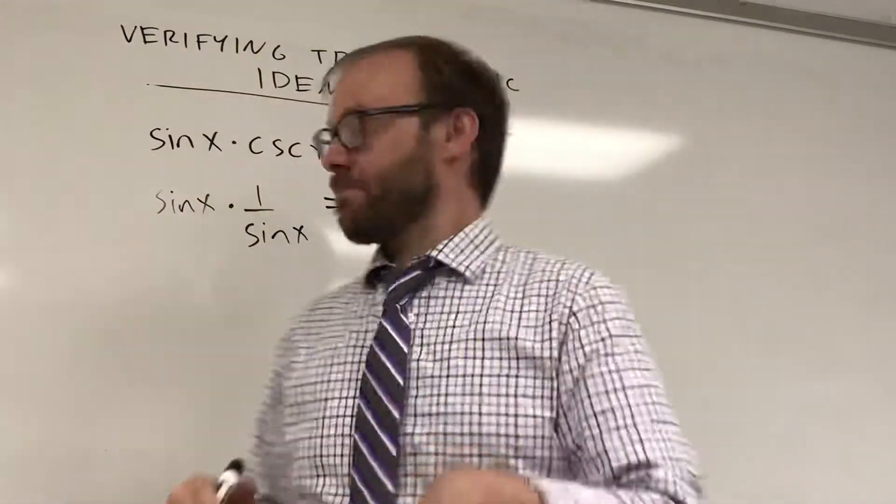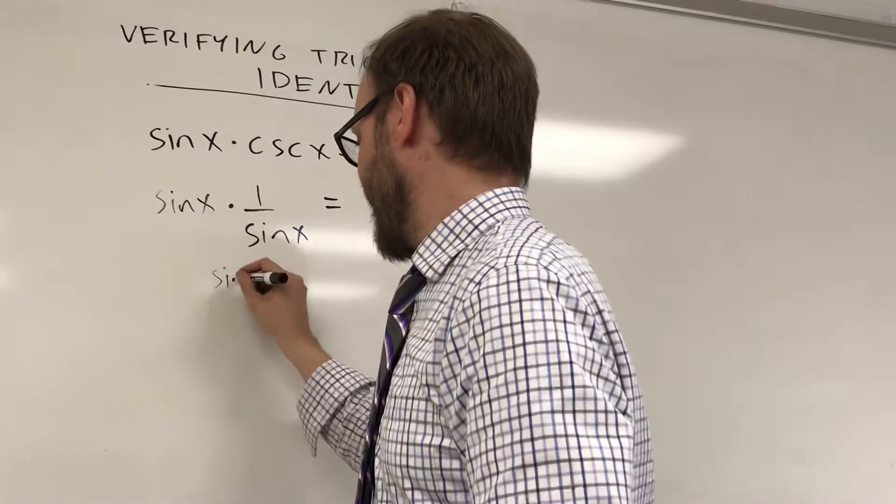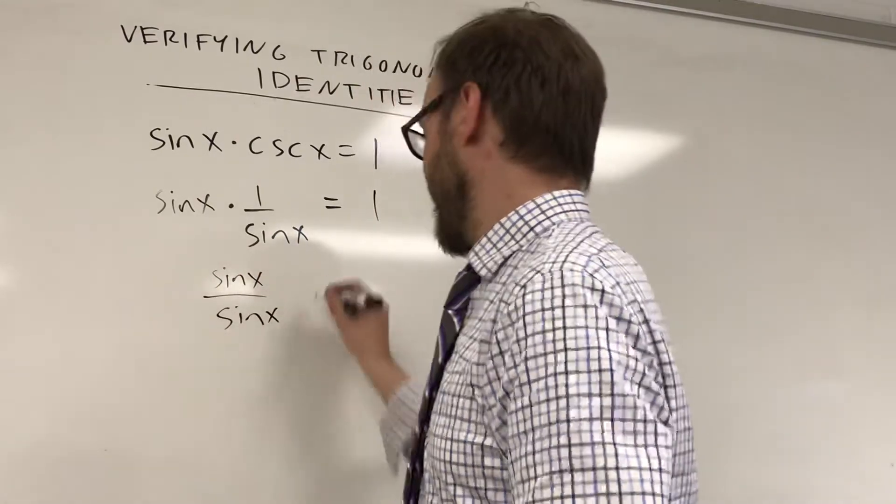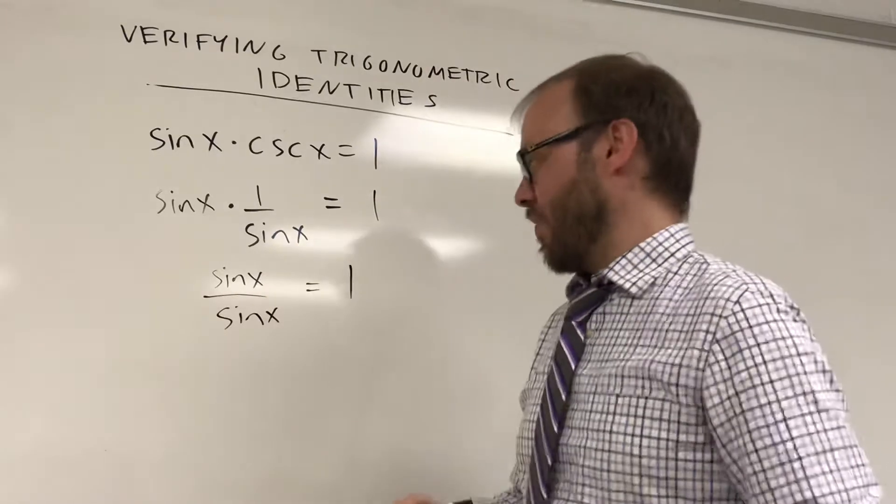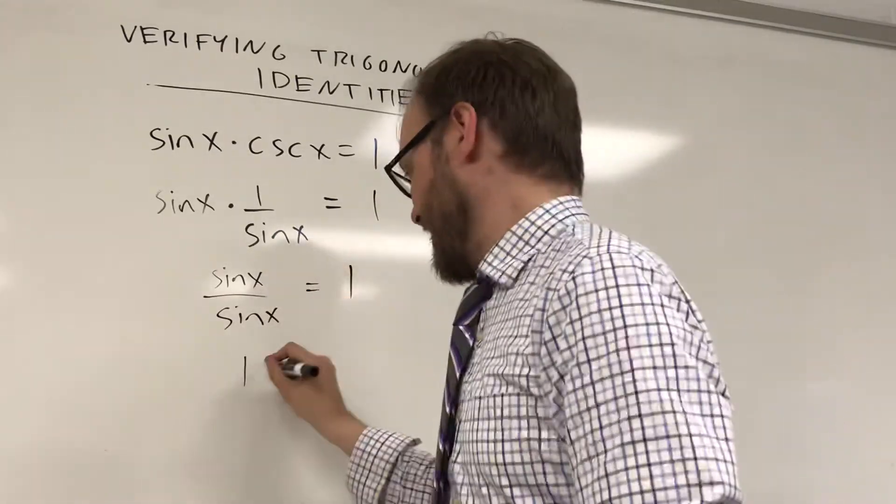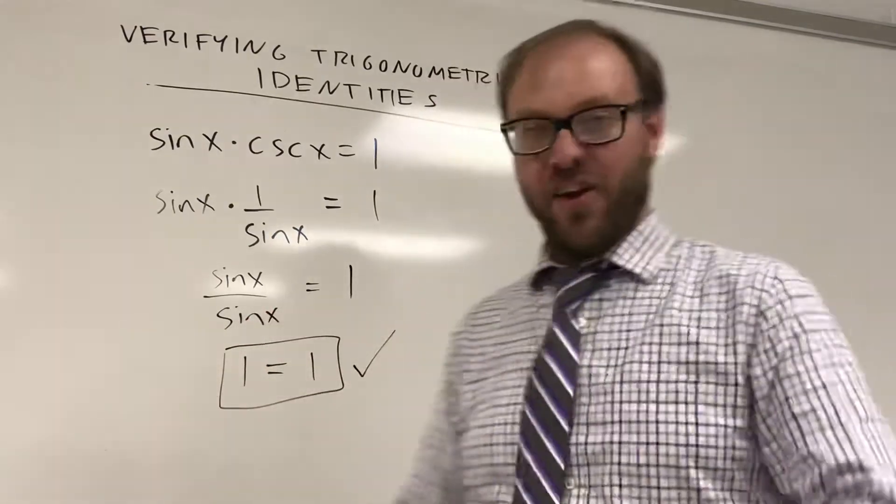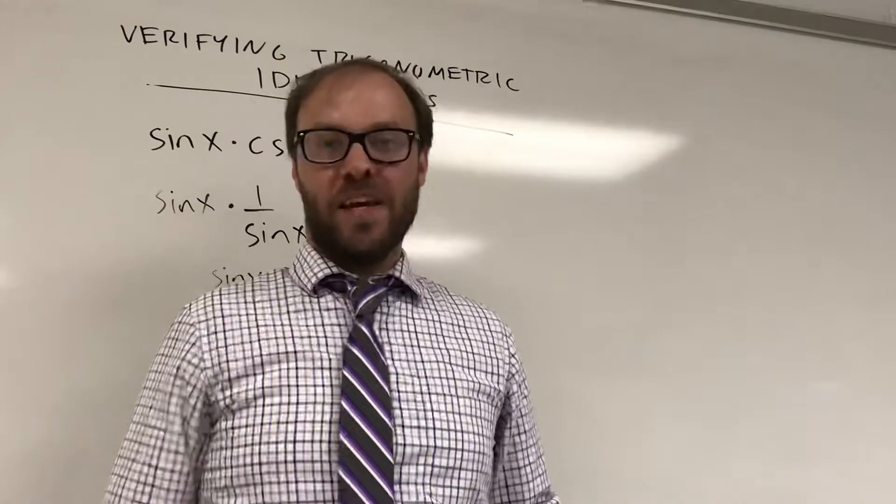This is going to simplify down to sine of x over sine of x. If I multiply that together that's equal to 1. The final statement here: anything divided by itself is equal to 1. So your final statement should always have the left side and the right side being equal to each other.